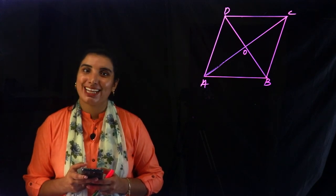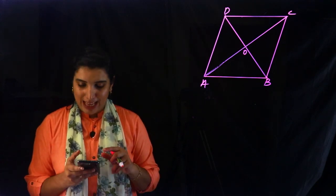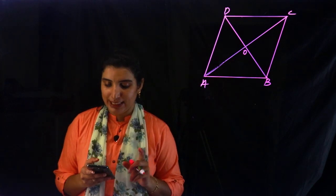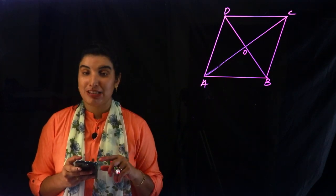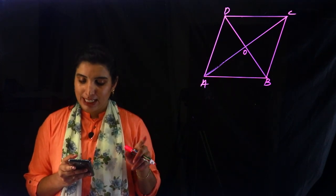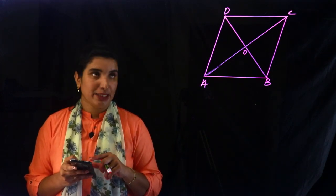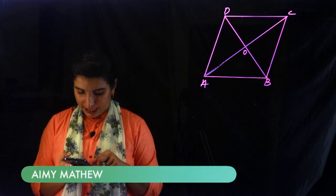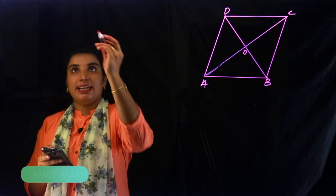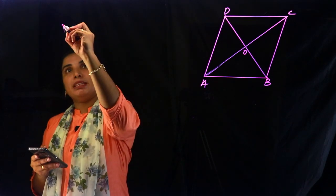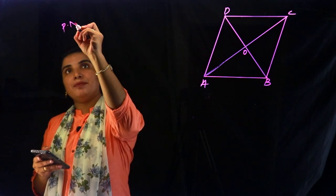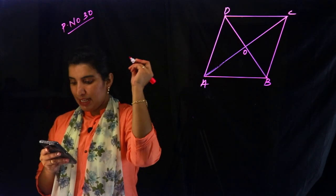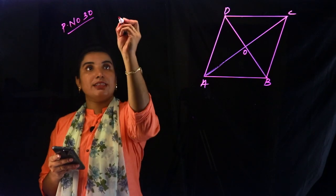Now, we have equal triangles. We are going to do these questions on page number 30. Page number 30, question number 10.